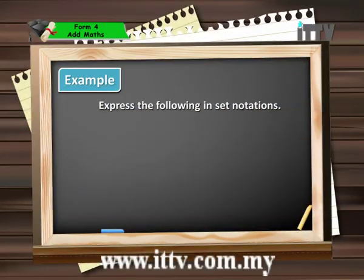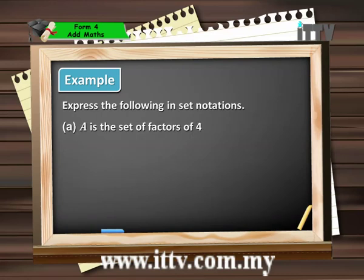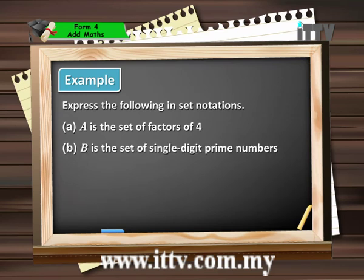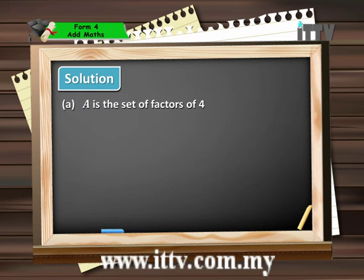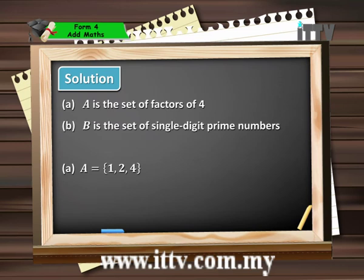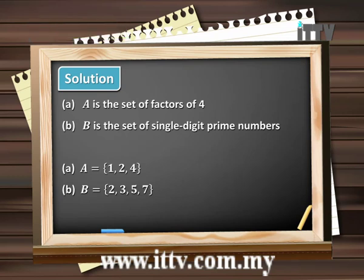For example, express the following in set notations. Part A: A is the set of factors of 4. Part B: B is the set of single digit prime numbers. When A is the set of factors of 4, we find that A equals {1, 2, 4}. These three elements are written in a pair of curly braces. Similarly for part B, B is the set of single digit prime numbers, where the elements are {2, 3, 5, 7}, written in the pair of curly braces.